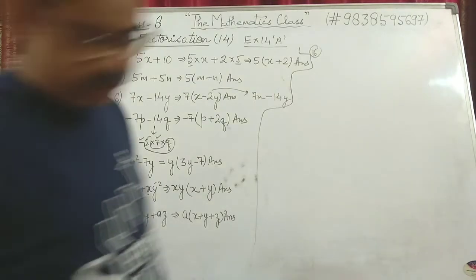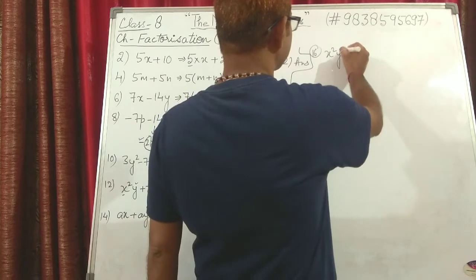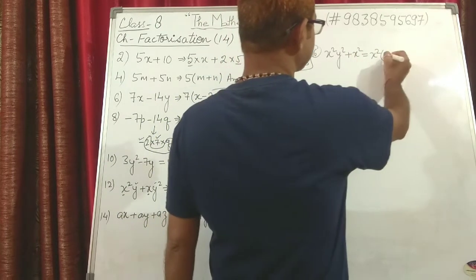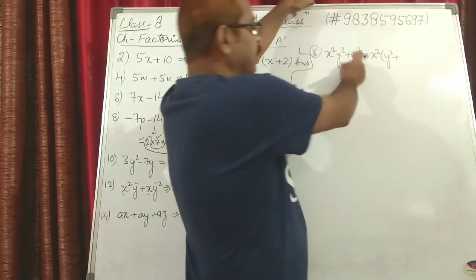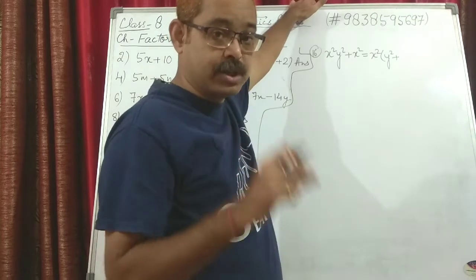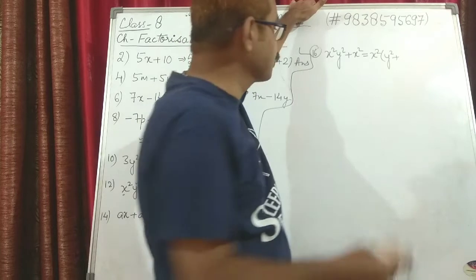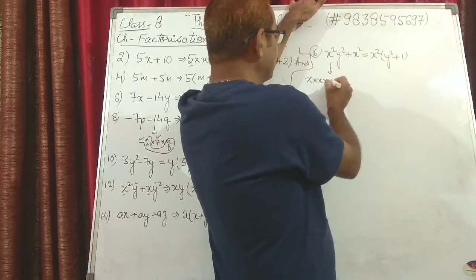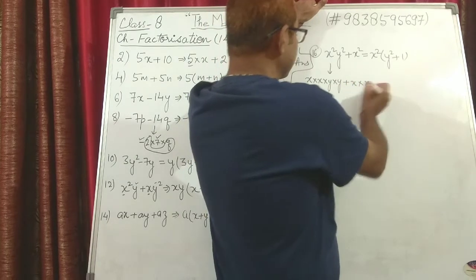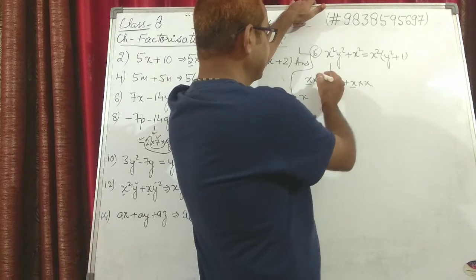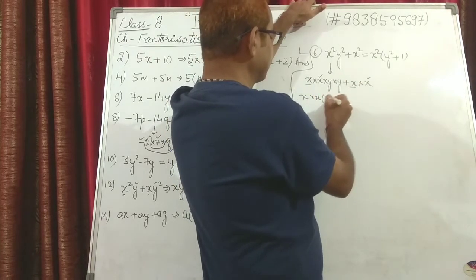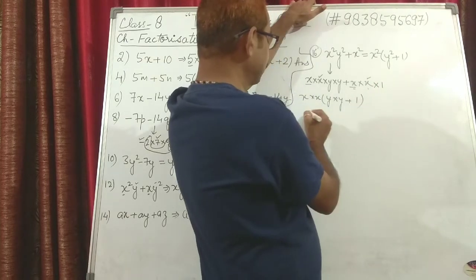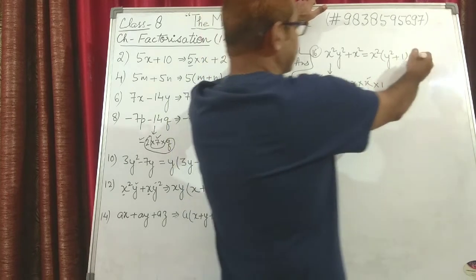Question 16: x²y² + x². From these two terms, x² is common. Now what is left in the first term? If you expand: x·x·y·y + x·x — taking x² common, from the first term y² is left, and from the second term 1 is left, because x² can be written as x²·1. So the answer is x²(y² + 1).